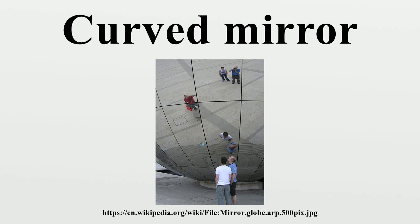The passenger side mirror on a car is typically a convex mirror. In some countries, these are labeled with the safety warning: 'Objects in mirror are closer than they appear,' to warn the driver of the convex mirror's distorting effects on distance perception.